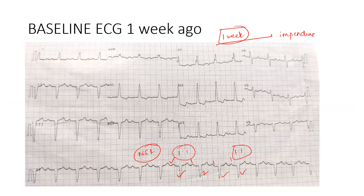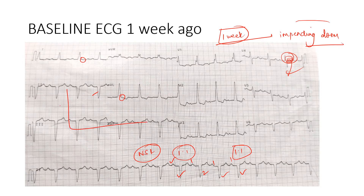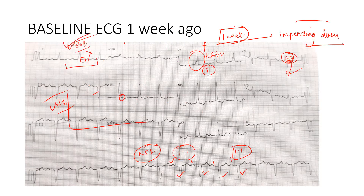There is no S wave in lead one and AVL again, and the criteria for left anterior fascicular block is present. In the pre-cordial leads, it appears like an RBBB, but in the limb leads it looks like an LBBB. A combination of LBBB morphology in limb leads and RBBB morphology in precordial leads is what is called masquerading bundle branch block. This is what our patient has.